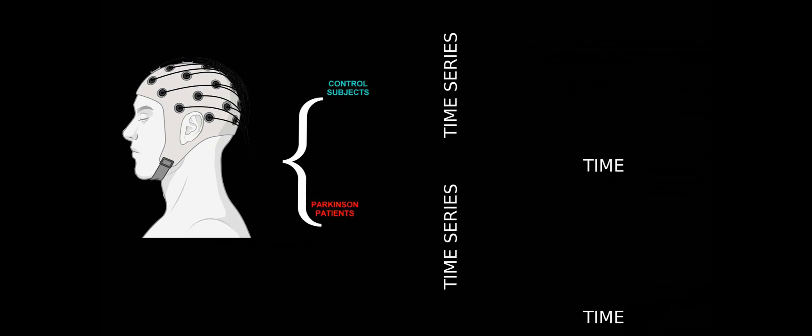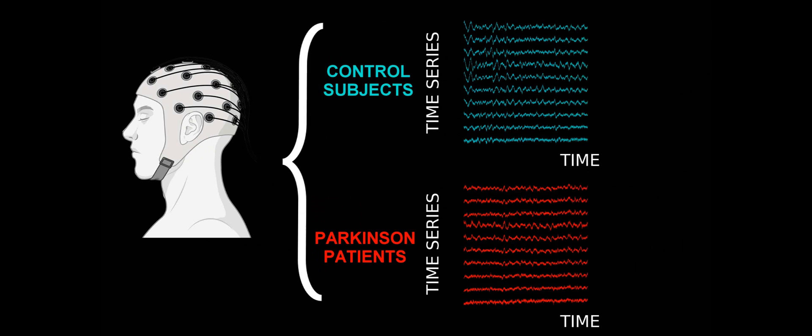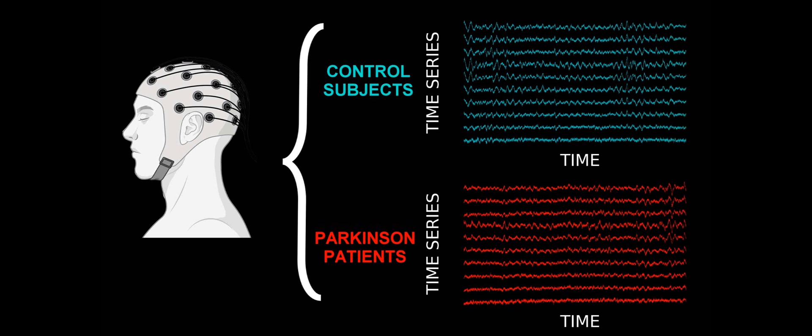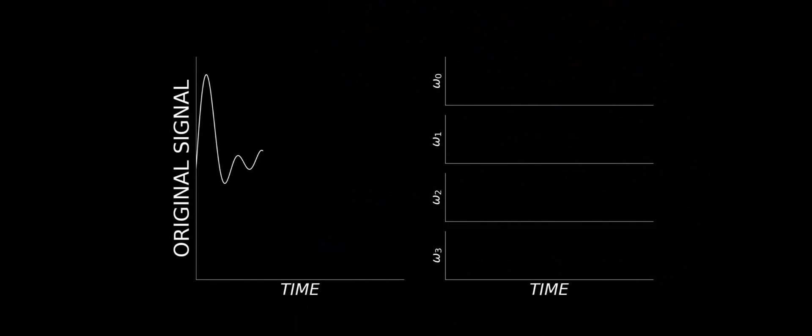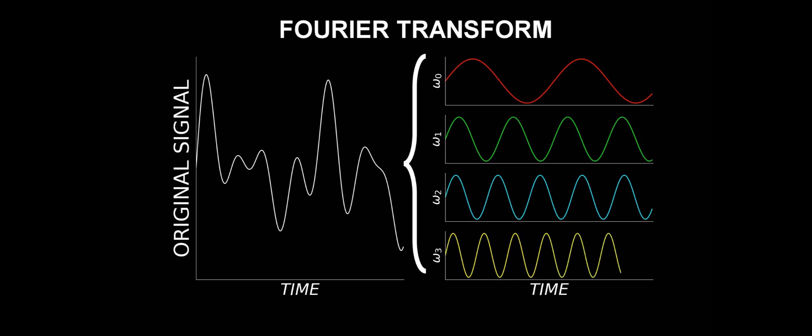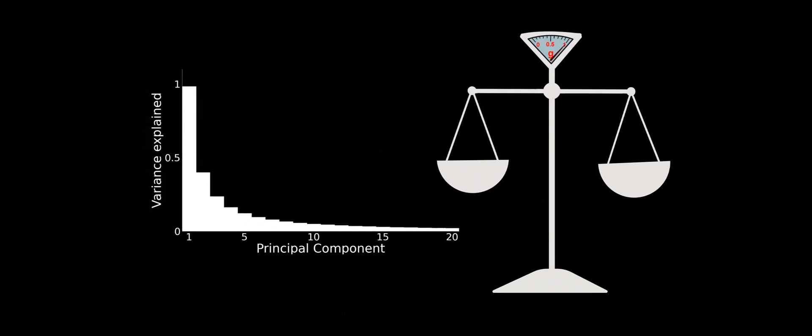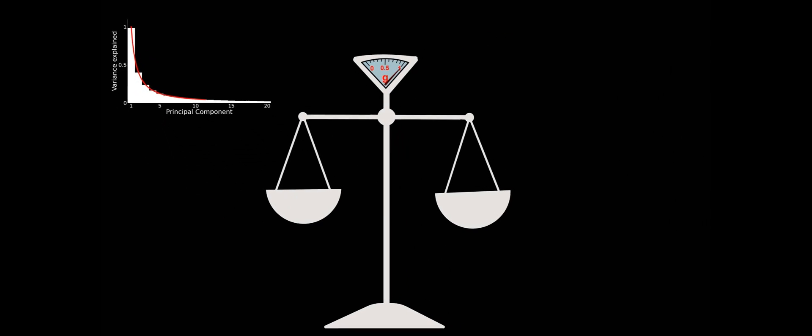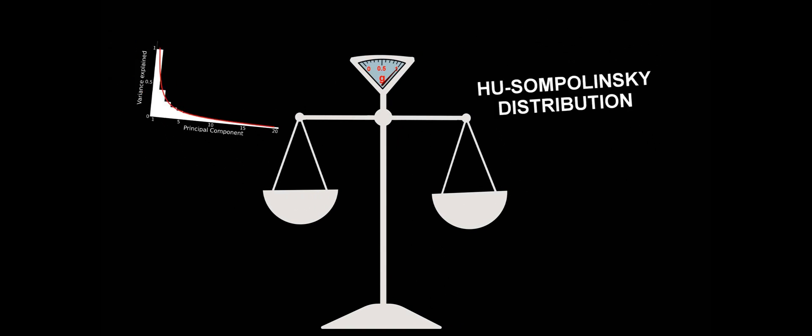Let us get back to the human brain. We will apply our technique to a dataset composed of MEG time series from control subjects together with Parkinson's patients. First, we decompose the time series into individual frequencies by means of the Fourier transform. Then we calculate the correlations between units and look at the hierarchy of principal components at each particular time scale. We find a very broad spectrum that can be well fitted to the Hu-Sompolinski distribution to infer the distance to criticality at each particular frequency.